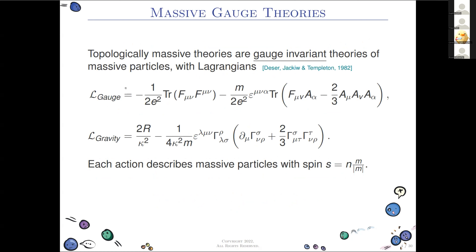A topologically massive gauge theory is a gauge theory in 2+1 dimensions with a Yang-Mills piece plus a Chern-Simons piece — a standard Chern-Simons gauge theory. There's an associated gravitational topologically massive theory, roughly given by an Einstein gravity piece and a gravitational Chern-Simons piece, as you might recognize from Henrik's talk.